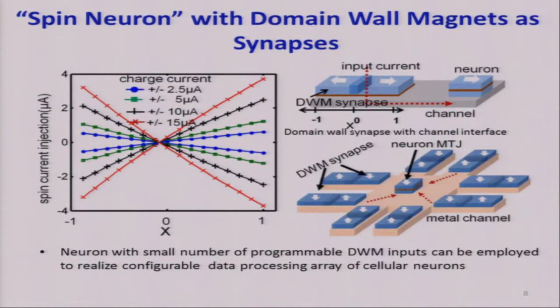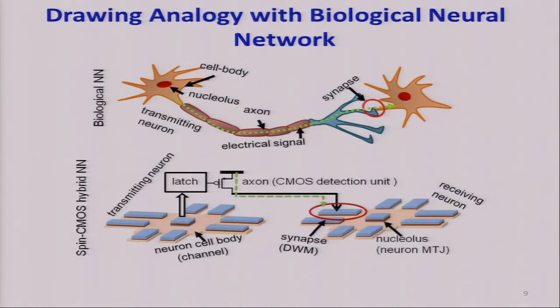Now we can see how these synapses can do the computation. Like this is a domain-wall and at the beginning, the offset is zero. We can apply the current in this way and it can push the domain-wall either to the left or to the right. So when we do the computation, the current will be put in a vertical way. So the generated spin current will be depending on the offset of this domain-wall. So in this model, we can use this domain-wall magnet as a synapse and this is the output neuron.